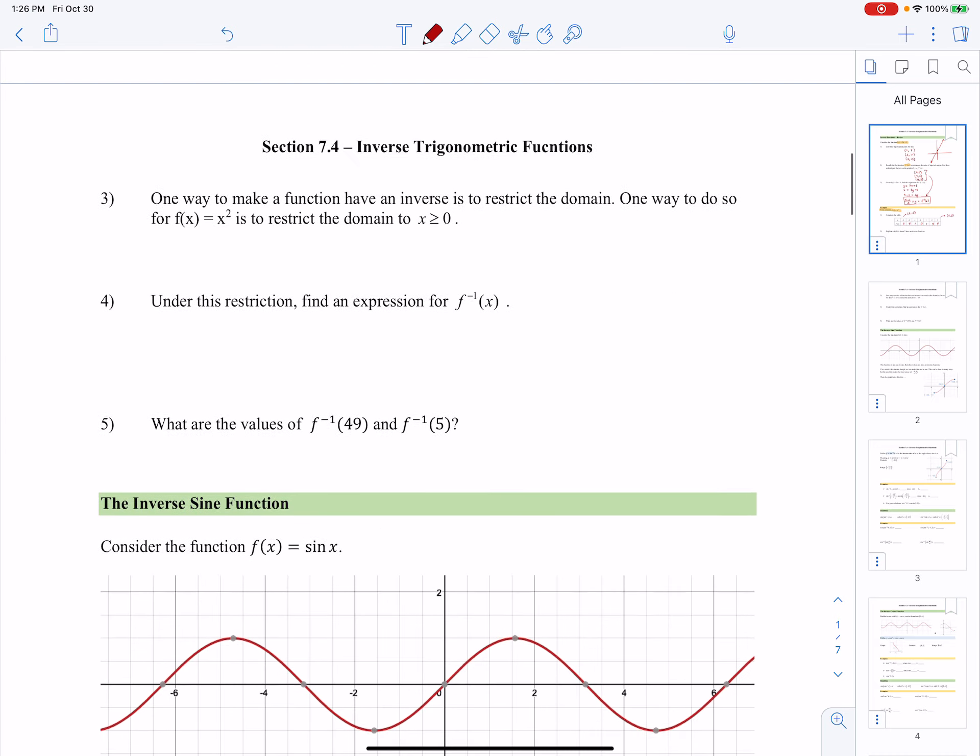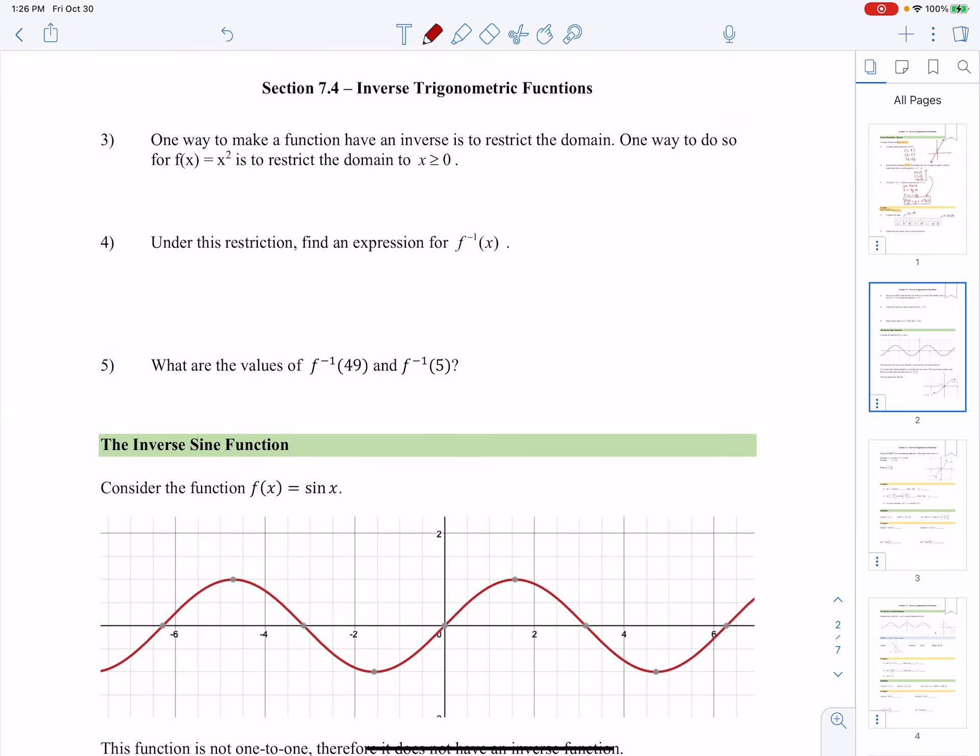Well, how do we address that? We do something called restricting the domain. And what does it mean to restrict the domain? It just means to cut off at a certain x value so that we know that the function has an inverse afterwards. So one way to do that is to restrict the domain to x greater than or equal to 0. And if you remember what y equals x squared looks like, the part where x is greater than or equal to 0 just looks like that. Remember, that's just half of the parabola.